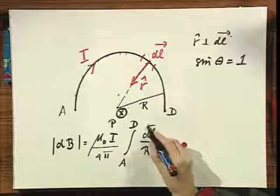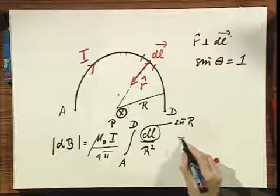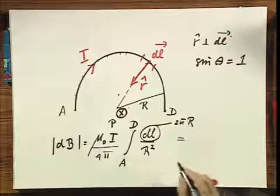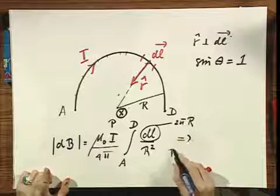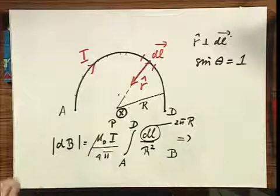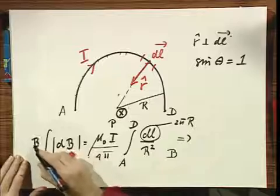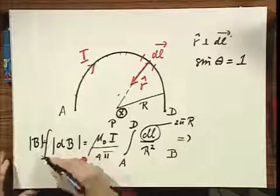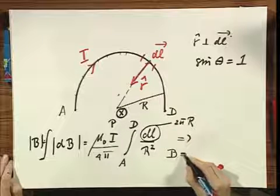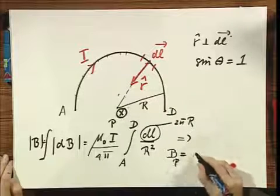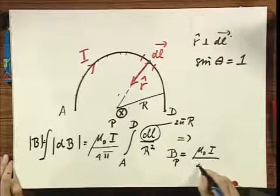But the integral of DL is simply 2 pi R. So what comes out of this is that, oh, this should be the integral of DB. So this is really B. It's the integral of all these elements. So what comes out is that B at that point P equals mu zero times I divided by four R.